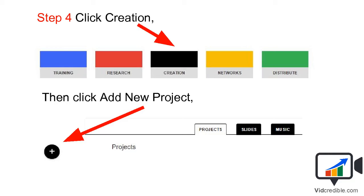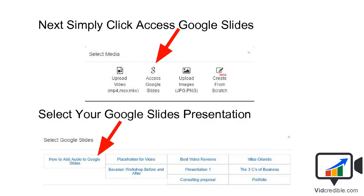Now that you've authenticated your Google account, simply click Creation and then click Add New Project. Once you've added a new project, you'll name your project and it'll bring up a menu which allows you to access your Google Slides. Once you click that button, it'll open up all your Google Slides presentations — select the one you want to record your audio and voiceover on.